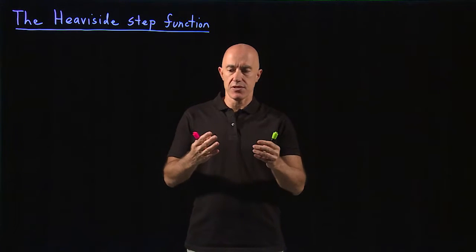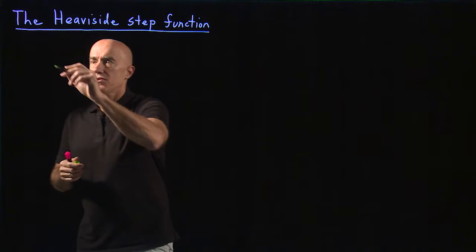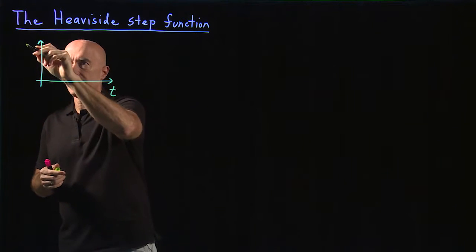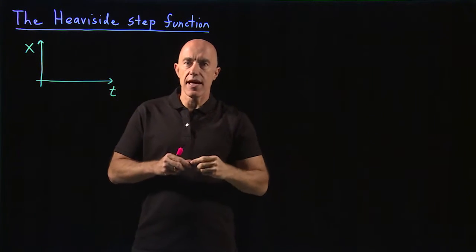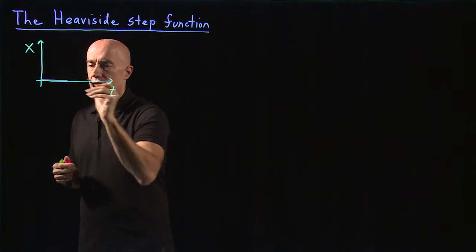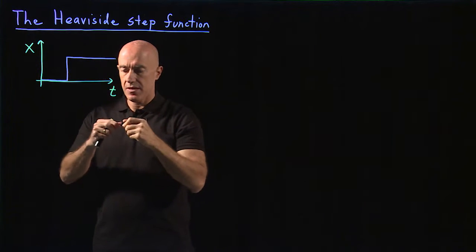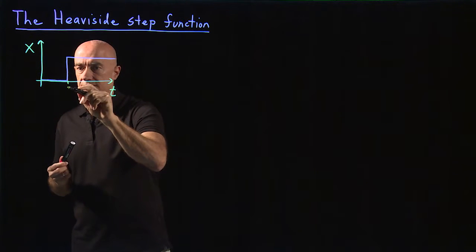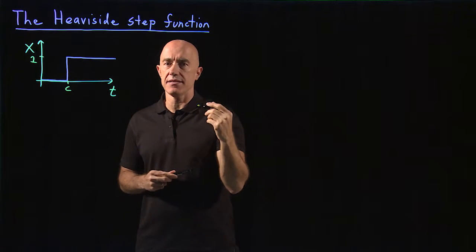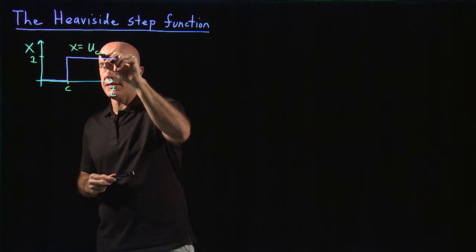What is the Heaviside step function? It's very easy to see what it is if we draw a graph. Let's call the x-axis t and the y-axis x. The Heaviside step function is a function that is zero until you hit some value c, and then it becomes one. This is the value of c, and this is the value of one. We call this the Heaviside step function, written as x equals u sub c of t — that's the notation we'll use.